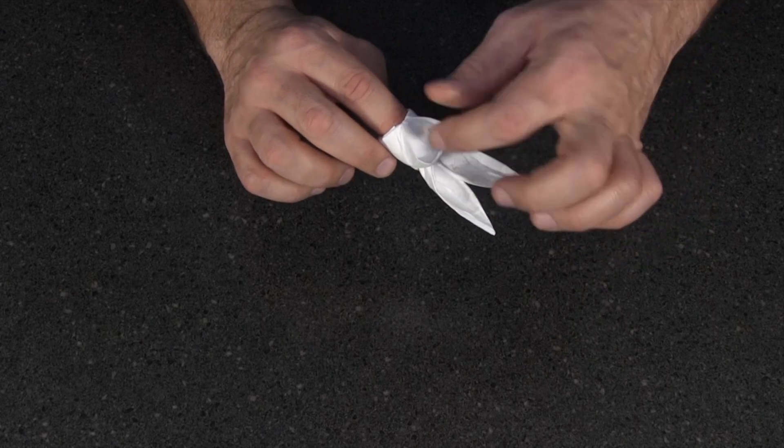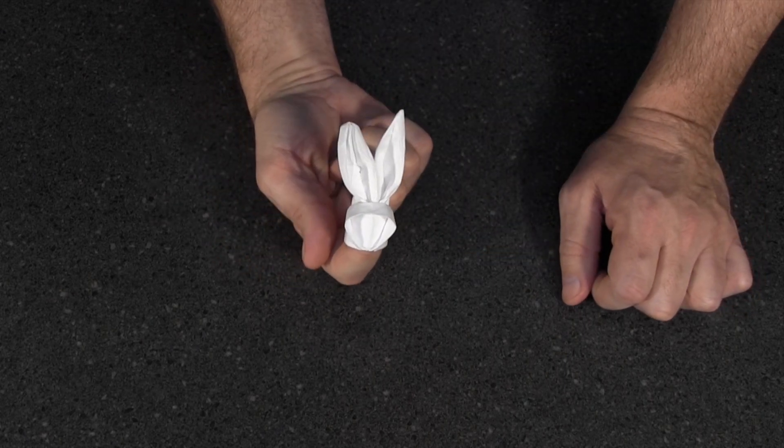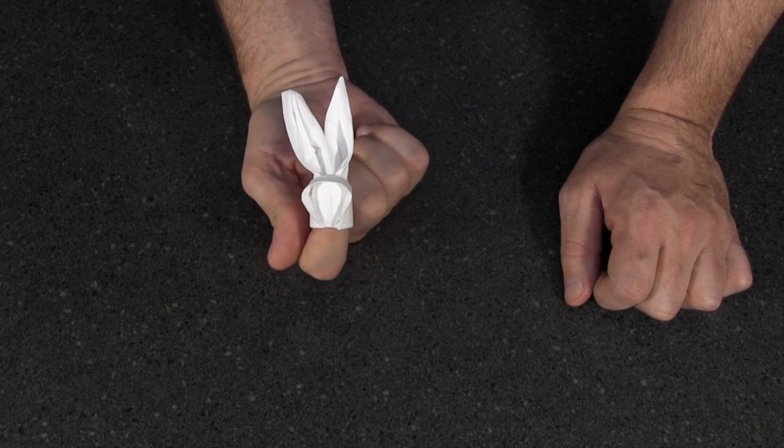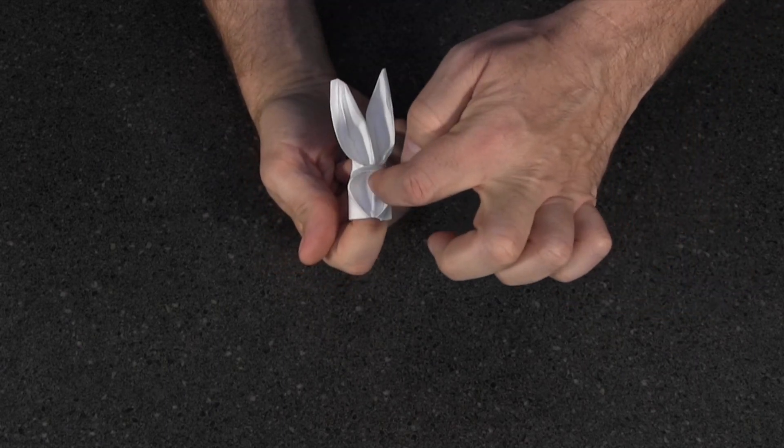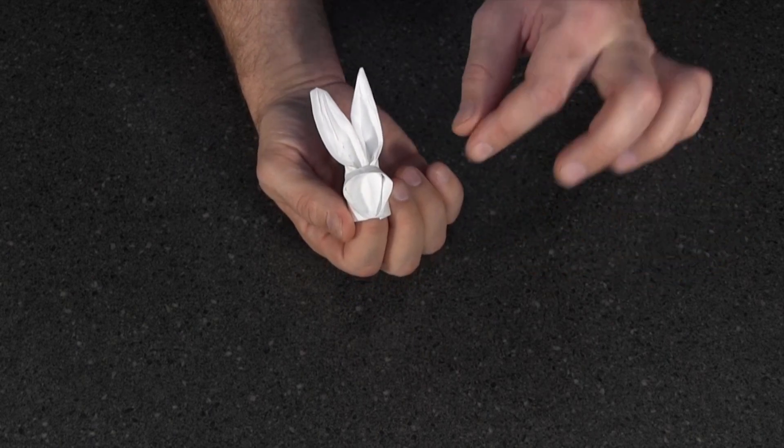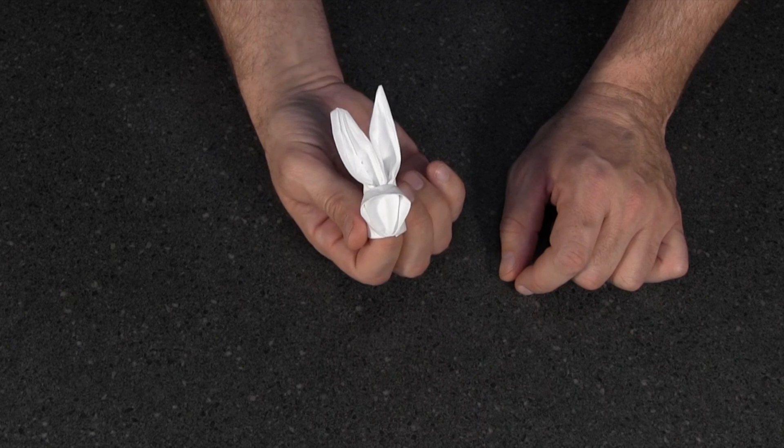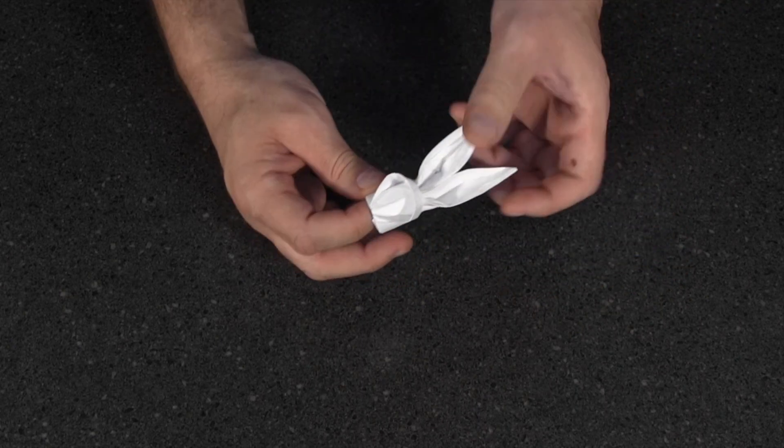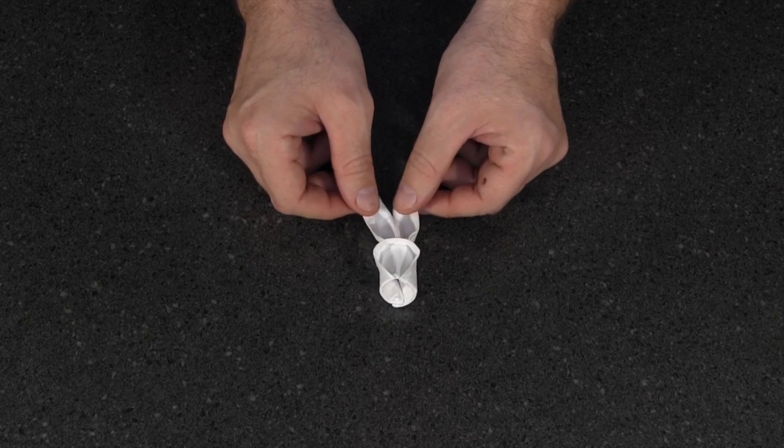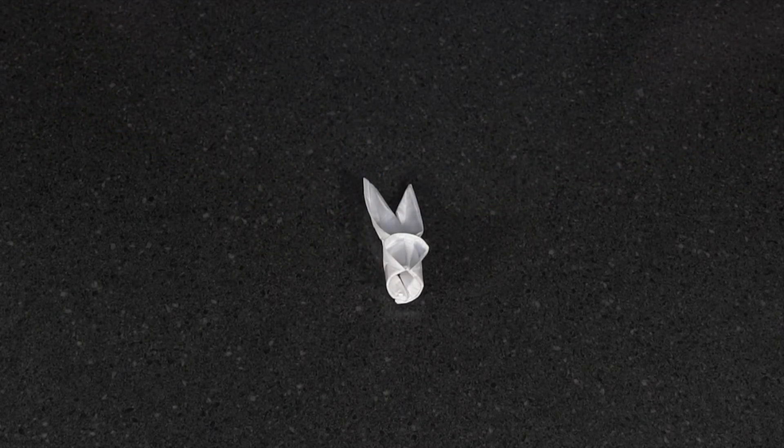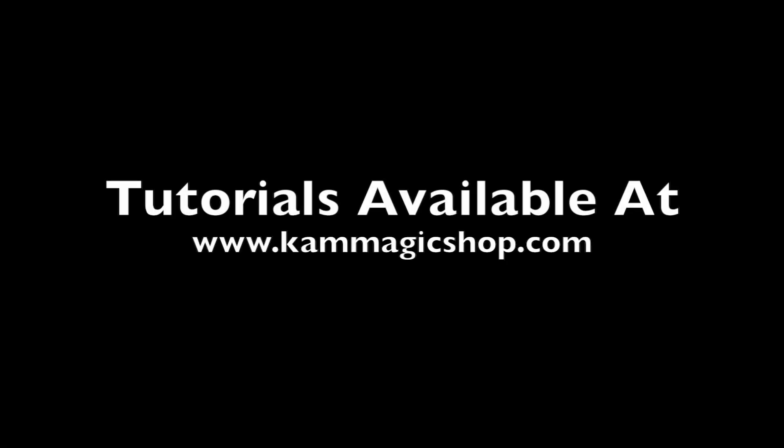And that is about it. Now you have a little napkin bunny. Of course, he doesn't have a face, so it's kind of fun to give the spectator a pen and let them draw a little face on there. They can make a happy bunny, a sad bunny, or a surprised bunny, however they want. It's a nice little souvenir for your guests. That's all.